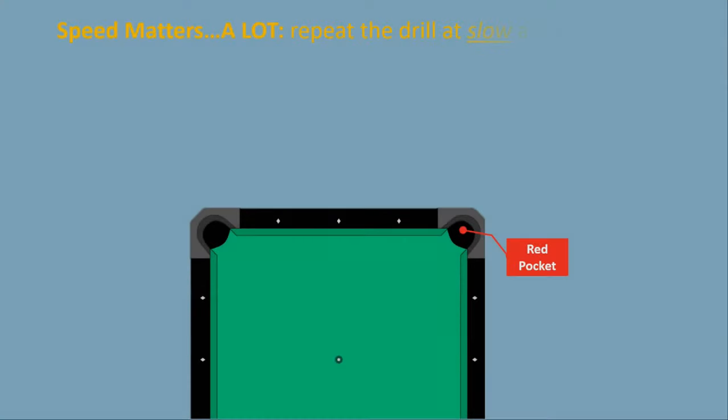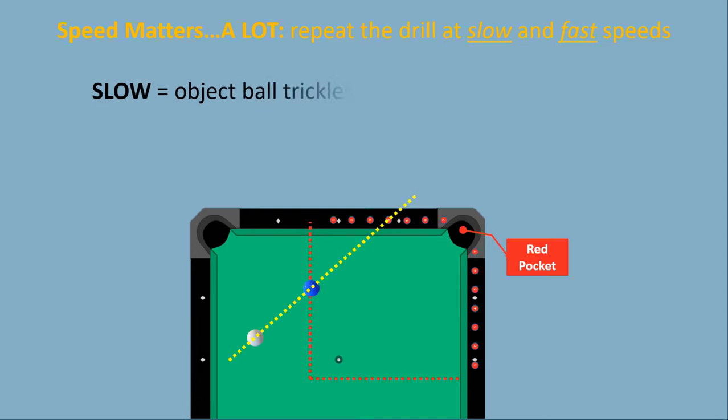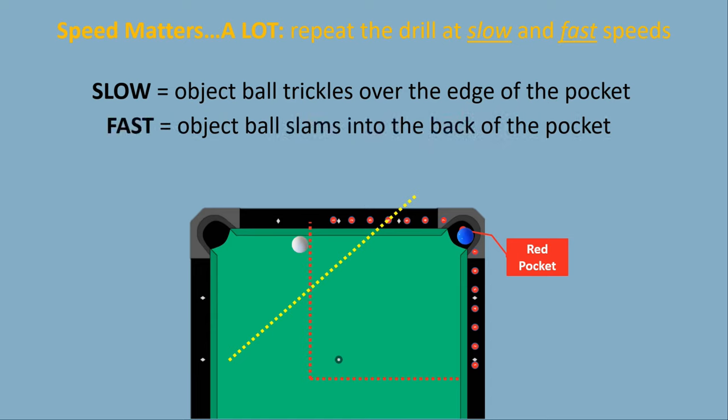Now that you've completed the drill using your most confident stroke, you need to learn to adjust your aim when you have to vary your stroke speed for position or strategic reasons. So repeat the drill once using slow speed to make the object ball trickle over the edge, and once where the object ball slams in the back of the pocket. You might be surprised how much you have to adjust your aim on some of these breadcrumbs.